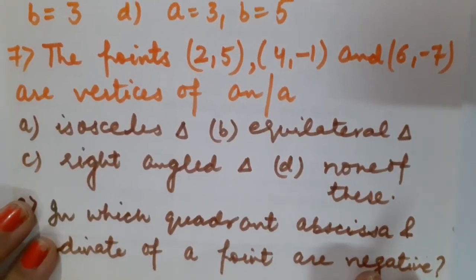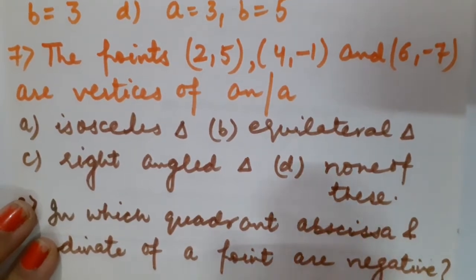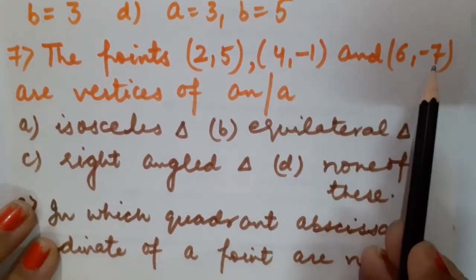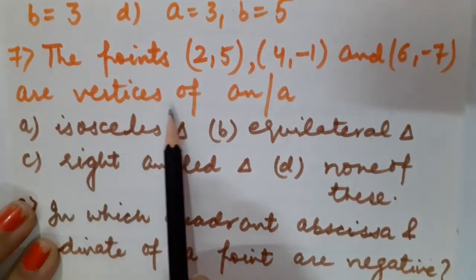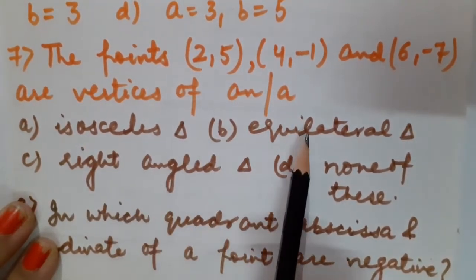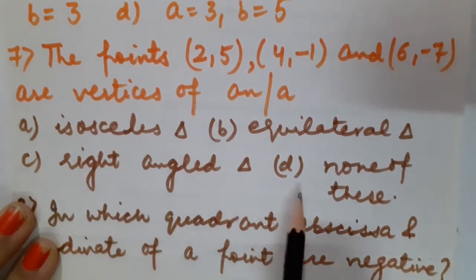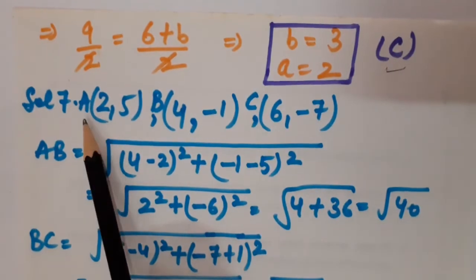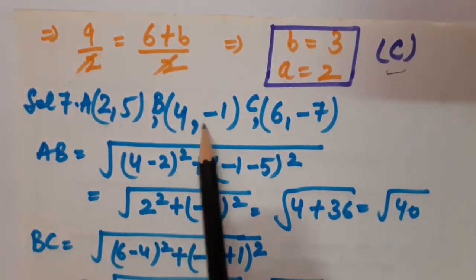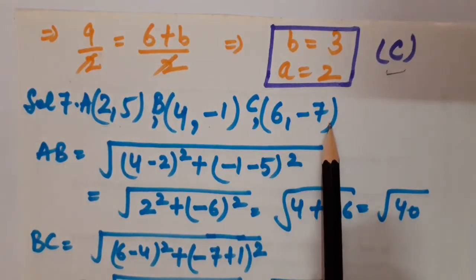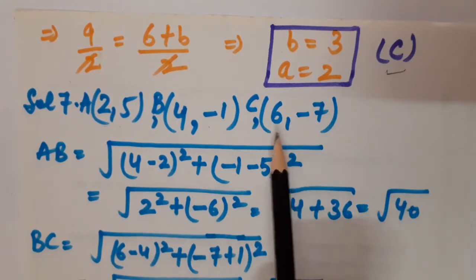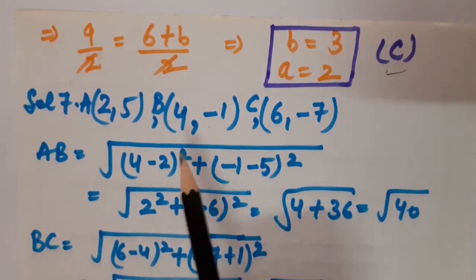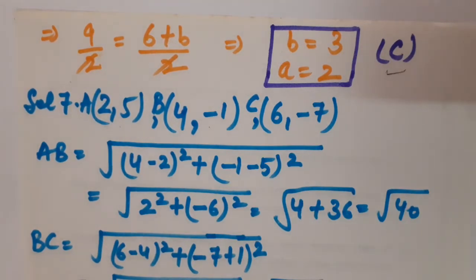Question number 7: the points (2,5), (4,−1) and (6,−7) are vertices of which type of triangle — isosceles, equilateral, right-angle, or none? Let A(2,5), B(4,−1) and C(6,−7). Let us find the distances between them to determine which figure they form.